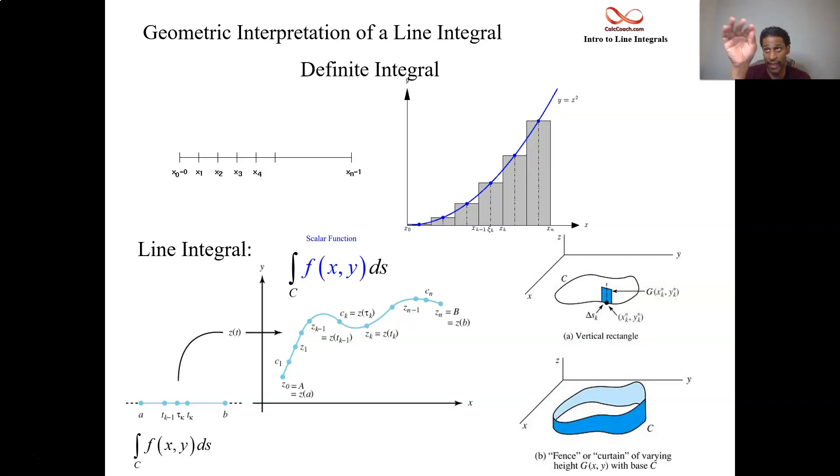And ds is going to be the square root of the (dx/dt) squared and the (dy/dt) squared added up, all multiplied by dt. Let's look at some more hopefully helpful visuals.